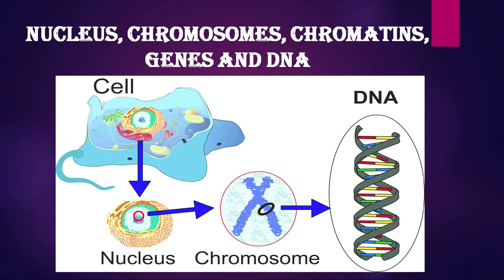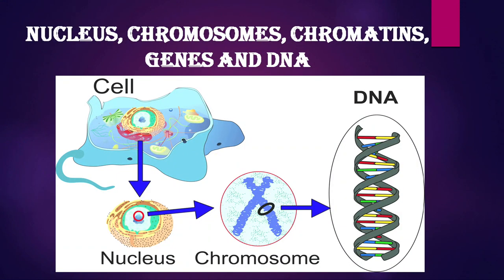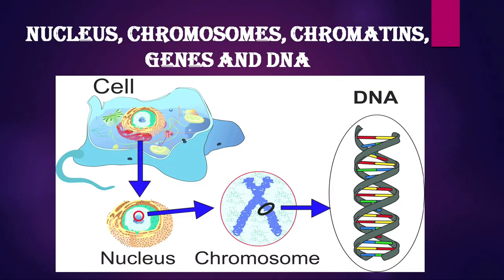If a cell is not dividing, this material inside the nucleus remains in thread form known as chromatin. When it is about to go into cell division, the threads start condensing and come into the form of chromosomes. When we look at the diagram, we realize that when a chromosome is extended back to chromatin, it ultimately reduces to DNA. Long threads and stretches of DNA form chromatin fibers, and when these chromatin fibers are condensed, they form chromosomes. Genes are the functional units of DNA - functional stretches of DNA which form certain proteins that are very useful for various functionings of our body.